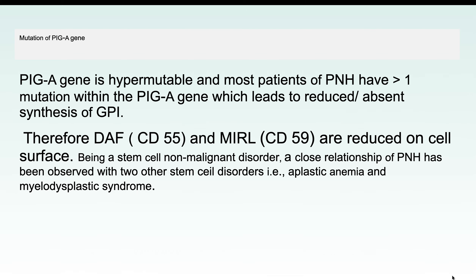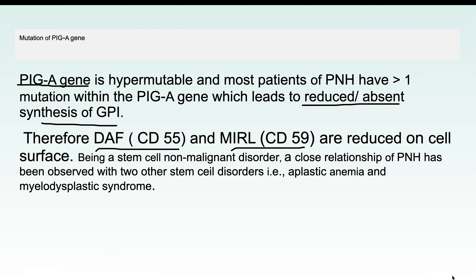The PIGA gene is a hypermutable gene. Patients with PNH do not have one type of mutation; they have multiple mutations of this gene, which leads to absent synthesis of the GPI anchor and therefore reduced expression of CD55 and CD59 on the cell surface.